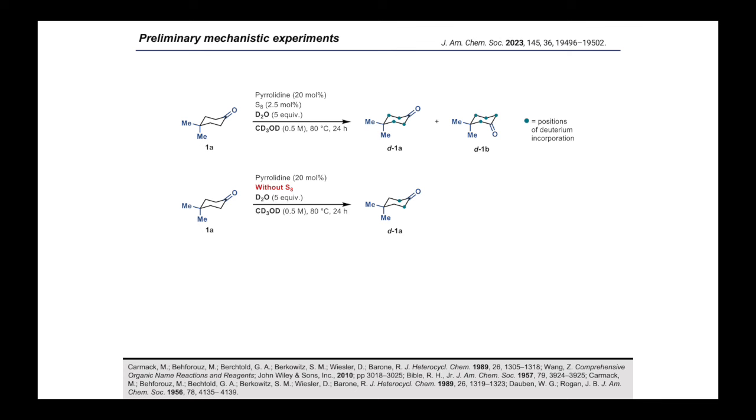Having established a protocol to achieve the chainwalking isomerization of ketones, preliminary mechanistic experiments were performed. Based on studies on the Willgeroth-Kindler reaction and related transformations, we surmised that the reaction likely proceeds through the formation of an enamine intermediate. To test this hypothesis, 4,4-dimethylcyclohexanone 1A was submitted to the reaction conditions but using deuterated water as additive and per-deuterated methanol as the solvent. This led to deuterium incorporation detected at all methylene carbons in both D1A and D1B. Since this includes both the methylene carbons adjacent to the quaternary carbon, this further affirms the reversibility of the system.